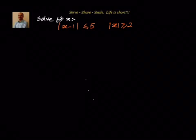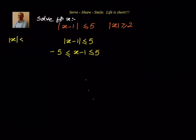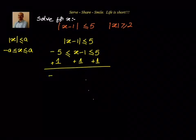First, let us understand the meaning of absolute value of x minus 1 less than or equal to 5. Absolute value of x minus 1 less than or equal to 5 is nothing but minus 5 less than or equal to x minus 1 less than or equal to 5. We know that absolute value of x less than or equal to a means minus a less than or equal to x less than or equal to a. Based on that logic, we add 1 on both sides to get minus 4 less than or equal to x less than or equal to 6. So x values are between minus 4 and 6.